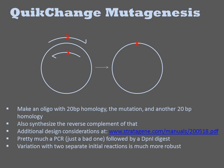Quick-change mutagenesis is the easiest to implement site-directed mutagenesis technique. You design two complementary oligos with 20 base pairs of homology to the template plasmid, followed by the mutation, and then another 20 base pairs of homology. Thus these are typically 45 base pairs or so in length.